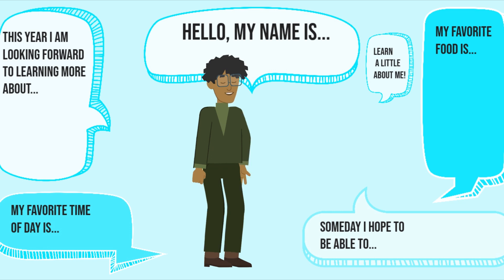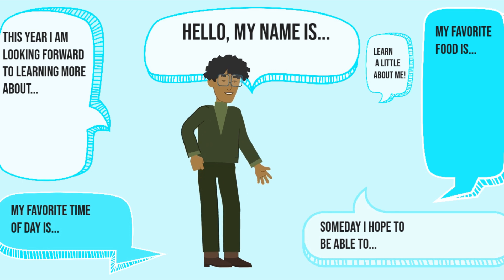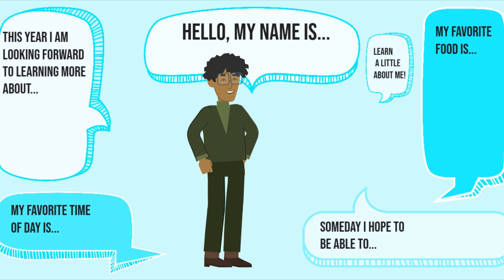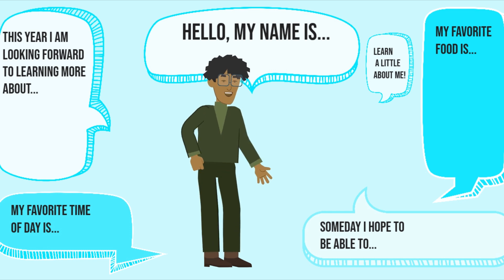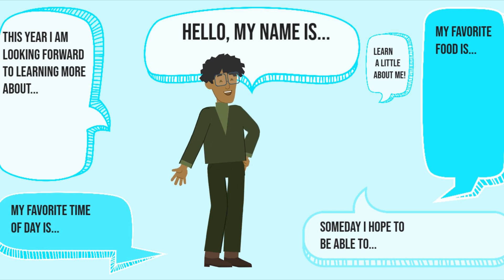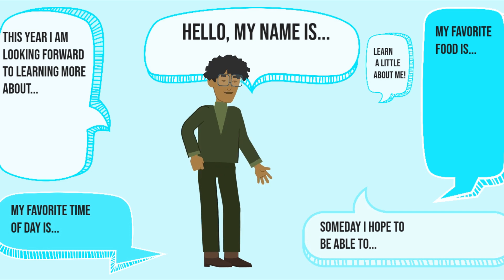Key Responsibilities: 1. Leading the State Cabinet — Article 163. 2. Implementing State and National Policies — Article 167. 3. Managing State Finances — Article 168. 4. Maintaining Law and Order — Article 165. 5. Ensuring Development and Growth — Article 166.